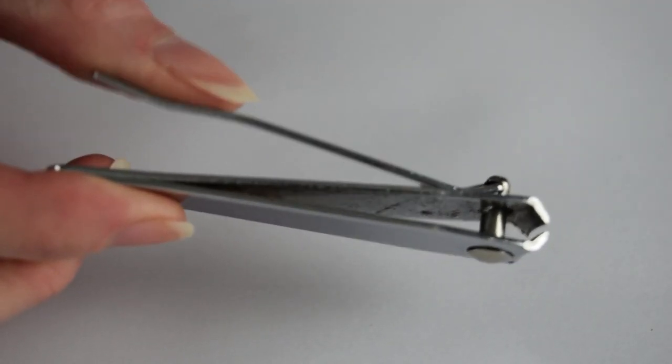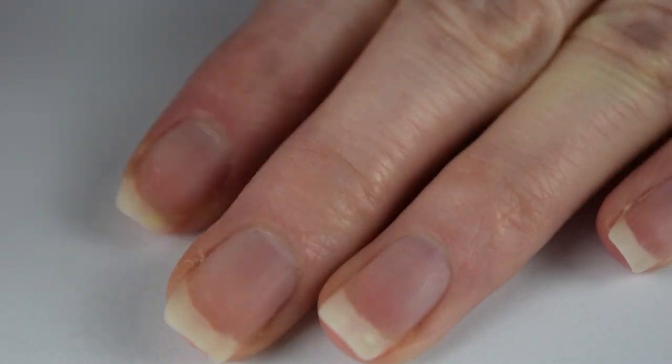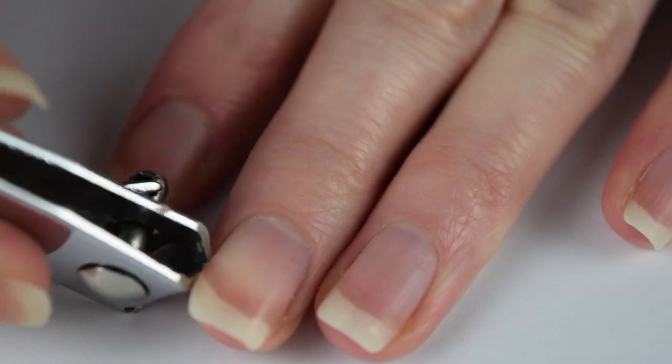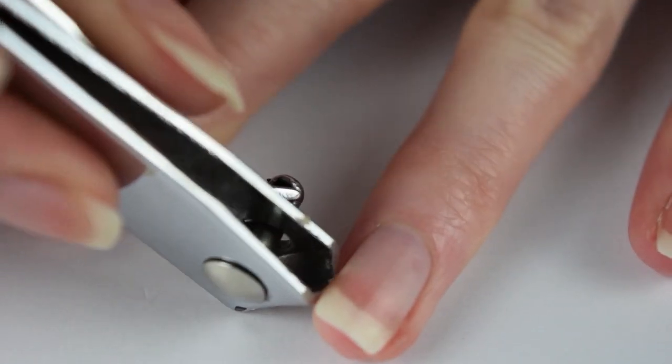Then with a nail cutter like this, I just simply cut the bits of skin that are on the side of my nails like this, and I do it for both hands.